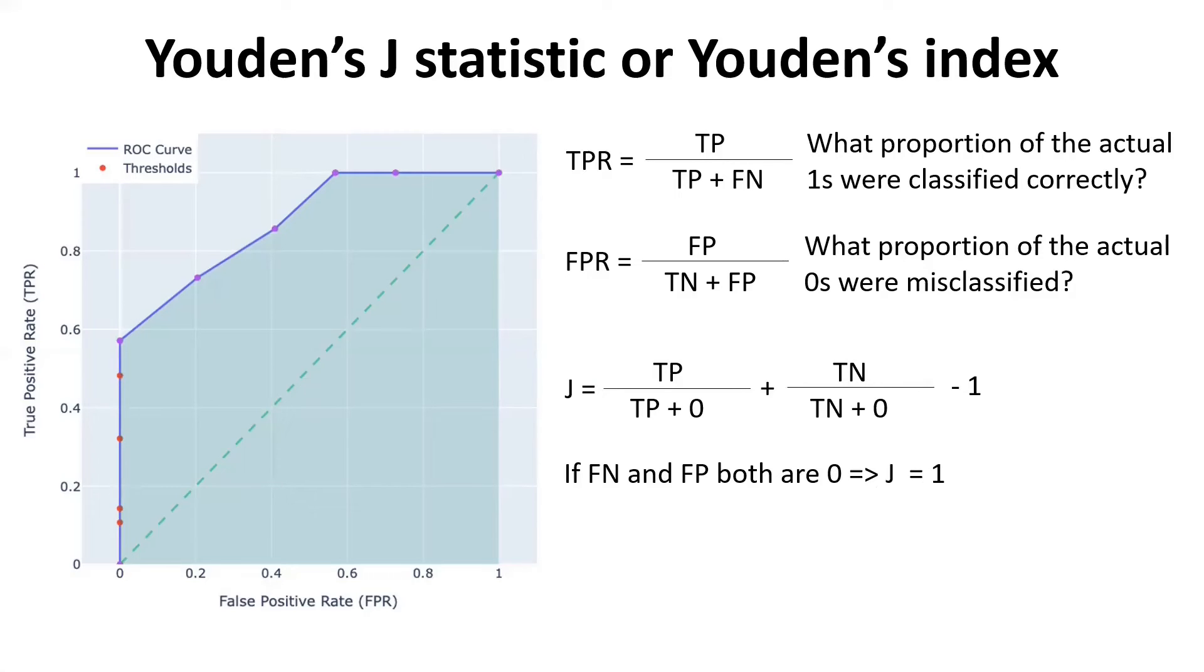Now what happens at the other extreme? Let's say our true negatives and true positives both are zero. Let's put these values as zeros in this formula. We have zero divided by zero plus a quantity and zero divided by zero plus another quantity. If you do these calculations, this will turn out to be zero. This will also turn out to be zero. So you're doing zero plus zero minus one. That'll be negative one.